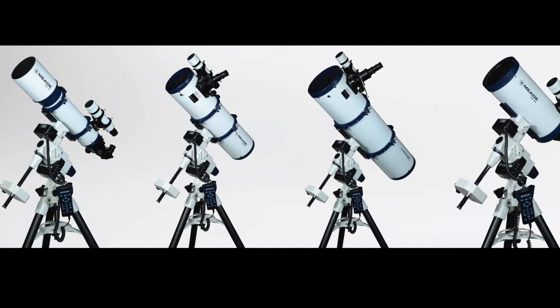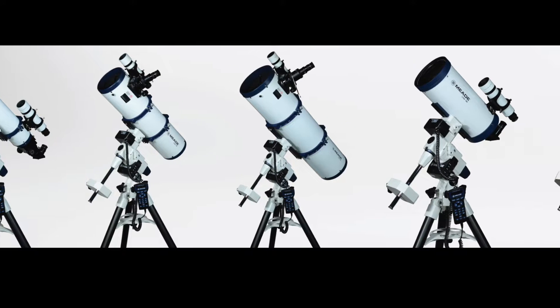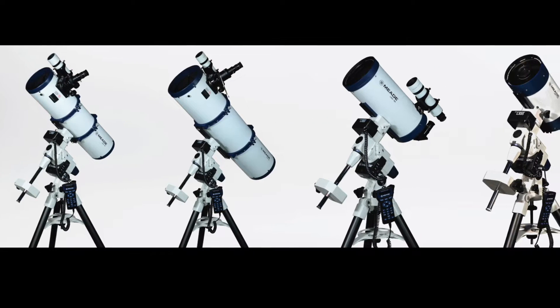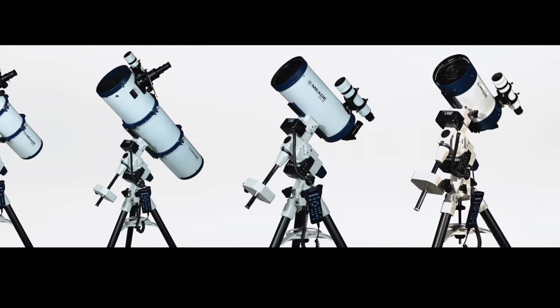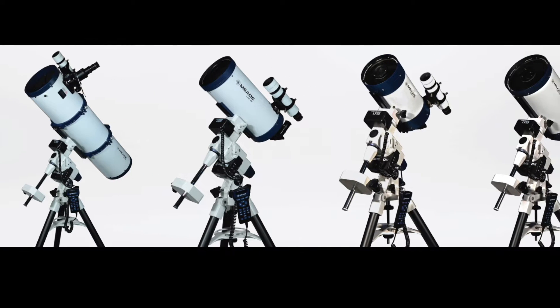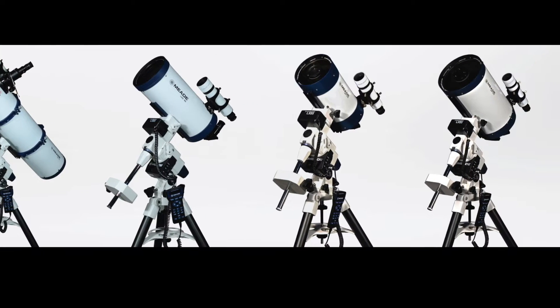Choose from a 5-inch Achromatic Refractor or a 6-inch Maksutov Cassegrain for lunar and planetary viewing, 6-inch or 8-inch Newtonian reflector for versatility, or the awesome 6-inch or 8-inch ACF models for deep sky views.